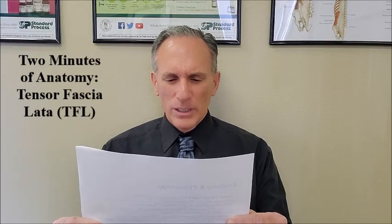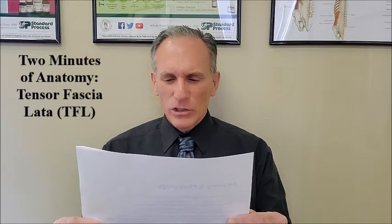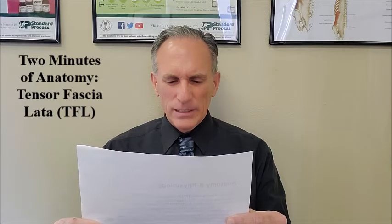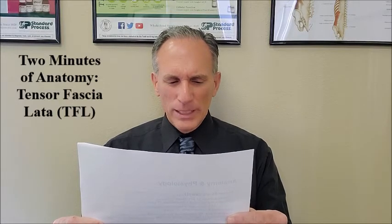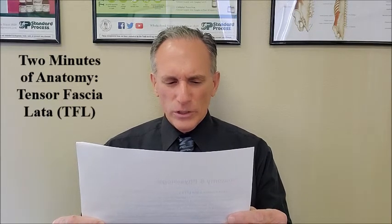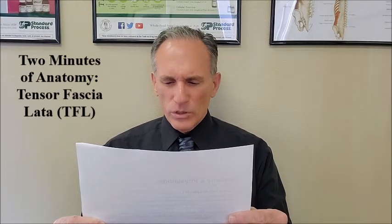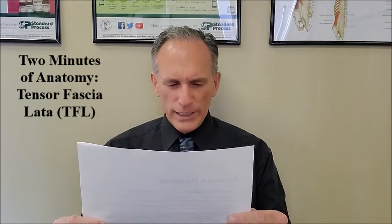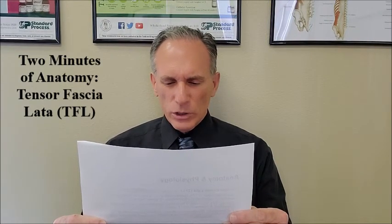Distally, the TFL becomes a tendinous structure as it merges with the superficial and intermediate ileal tibial band layers. Farther distal, the TFL tendinous fibers, including the superficial and intermediate ileal tibial band layers, fuse as a single structure near the level of the greater trochanter.